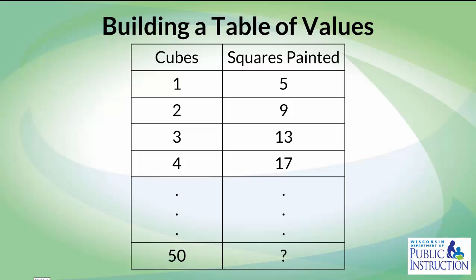Students should be able to see at this point in time that as they add cubes, every time they add one cube, the number of squares they'd have to paint increases by 4. So they could increase this pattern and keep going all the way until they got to 50, adding 4 every time.